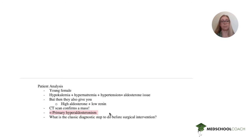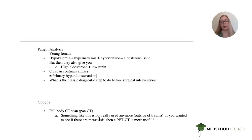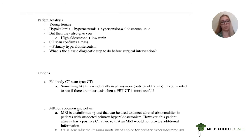A full body CT scan — you pretty much will never see that as a boards answer unless it's extreme trauma and the patient is somehow stable. If you wanted to check for metastasis, you'd use a positron emission tomography, i.e., a PET CT scan. An MRI of the abdomen and pelvis is a confirmatory test for adrenal abnormalities; however, this patient already had a positive CT scan.